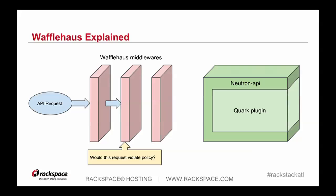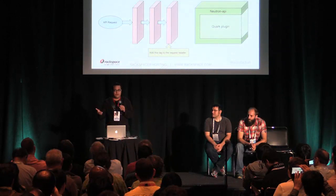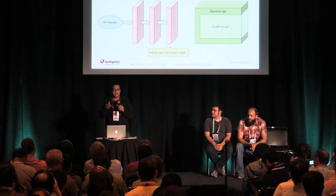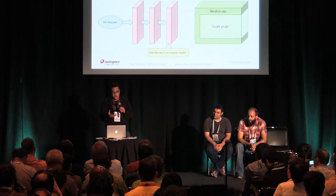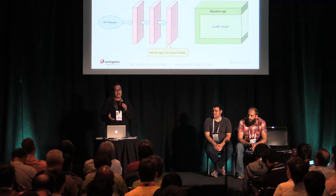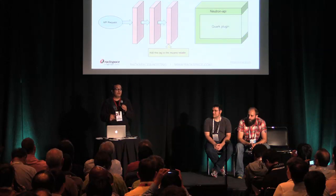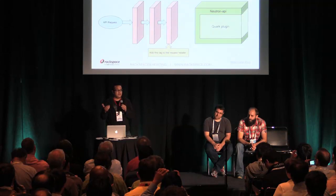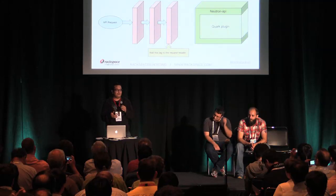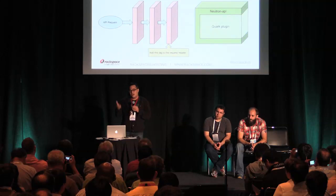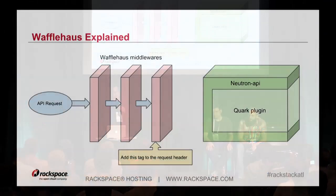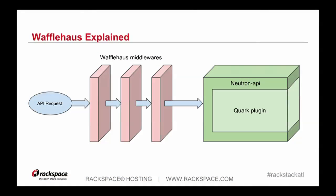You could also check if the request violates policy, such as you don't want a person to have a particular CIDR, or it could be IP policies. Or, for instance, what if Quark — our plugin — wants an additional piece of information that Neutron doesn't provide to Nova? Nova doesn't provide this information to Neutron normally. Using this waffle, we could actually insert that new information, either by querying some external database like Keystone or Nova again for more information. And then it'll just pass it through as if nothing happened — Neutron is none the wiser.